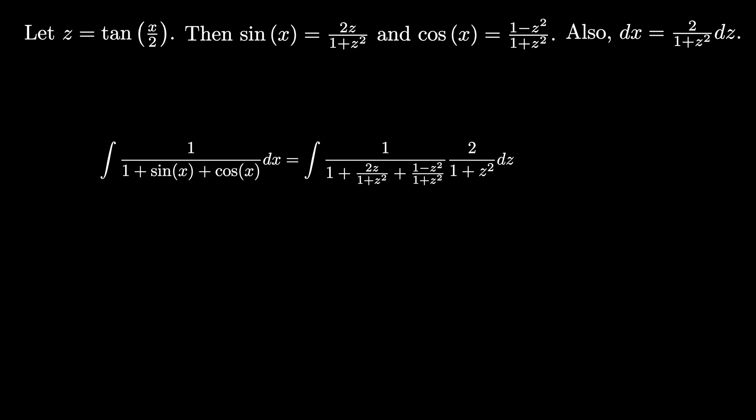When we multiply these two fractions, the 1 plus z squared in the denominator cancels a lot of the terms, so that we're left with the integral of 2 divided by 1 plus z squared plus 2z plus 1 minus z squared. Here the z squared and the minus z squared add to 0, so we're left with the integral of 2 over 2 plus 2z dz, and the 2's cancel to leave the integral of 1 over 1 plus z dz.